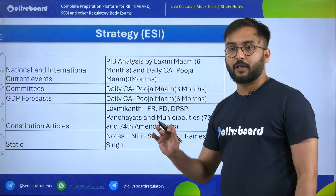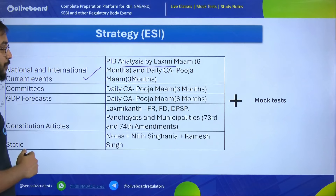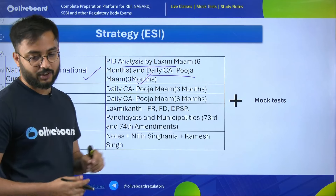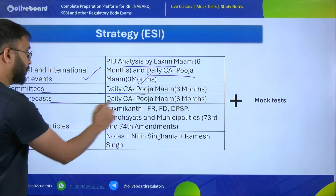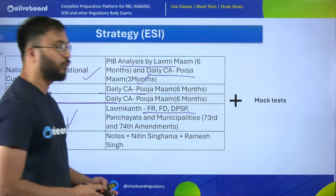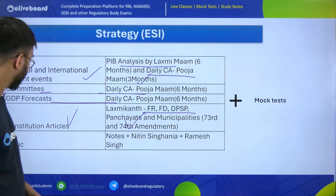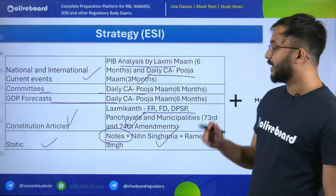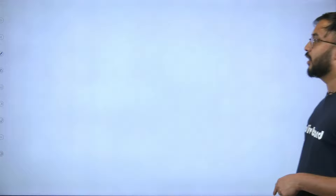For constitutional articles, you can selectively read from the internet — those related to fundamental rights, fundamental duties, DPSP, panchayat, municipalities, and the economic part mentioned in our polity. For the static part, you can go through the Olive Board notes, as we have already launched the RBI grade B LearnPack. You can also refer to Nitin Singh, Anya, or Ramis Singh books. Apart from that, alongside preparation you can add mock tests.